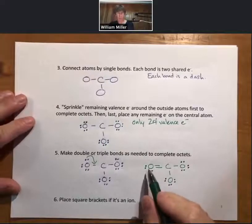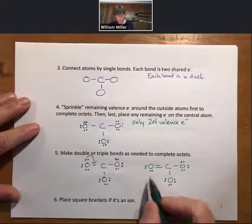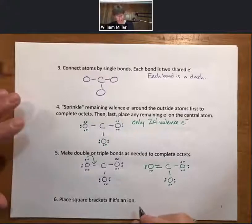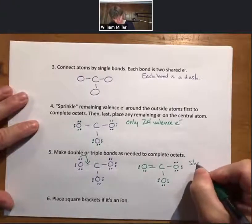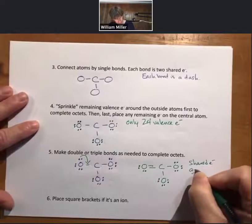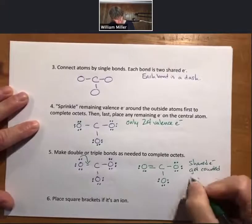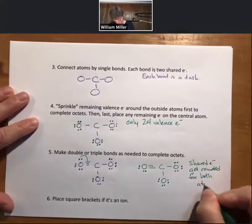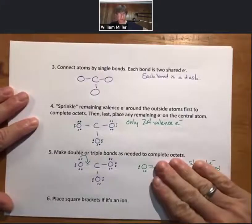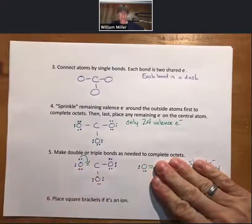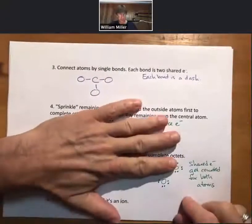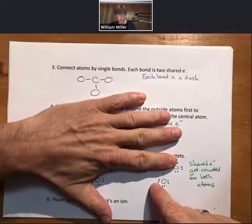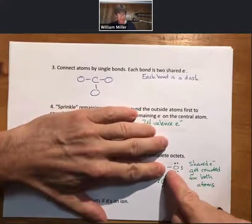And now what we're going to do is we're going to look for octets. We have, and we get to count, shared electrons get counted for both atoms or for each atom. So if we look at this oxygen, we have two, four, six, eight electrons around it. If we look at this oxygen, we have one bond, which is two, four, six, eight. That is an octet. Two, four, six, eight octet over here.